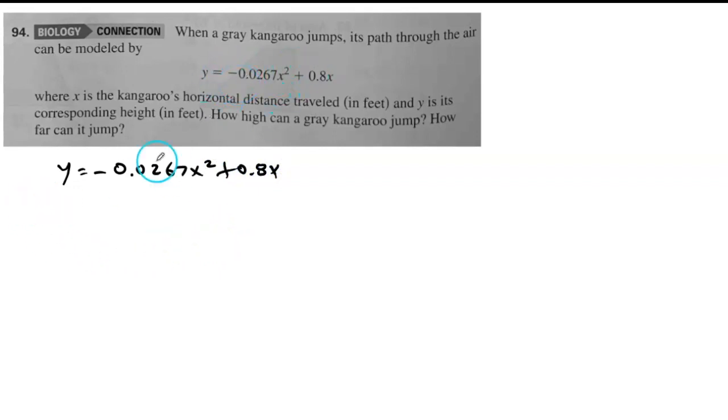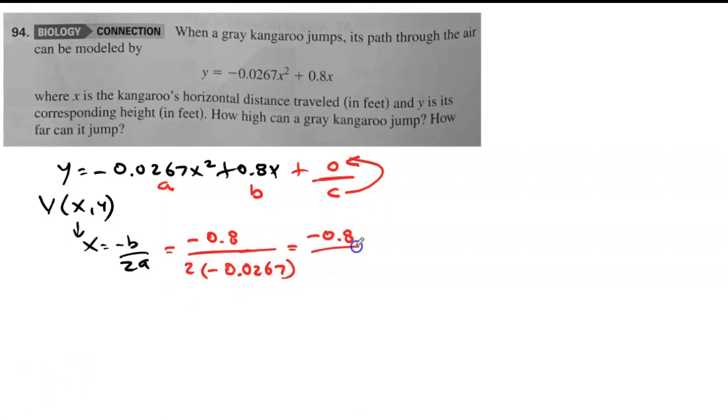My vertex is x, y. The x value is negative b over 2a. Remember, this is your a value, this is your b value. In this case, there's nothing here, so your c value is 0. A in front of the x squared, b in front of the x, c is your constant. Let's go: negative b over 2a, negative 0.8 over 2 times a, which is 0.0267. This times this is going to give me negative 0.0534. If I divide these two, I'll get 14.98, almost 15.